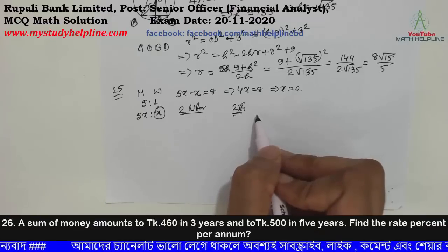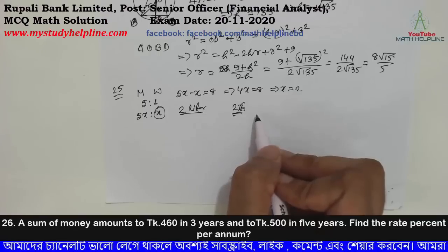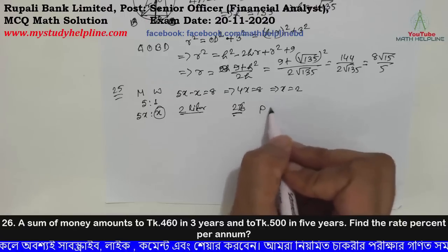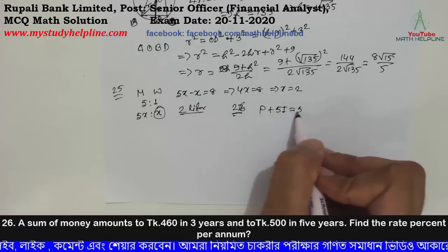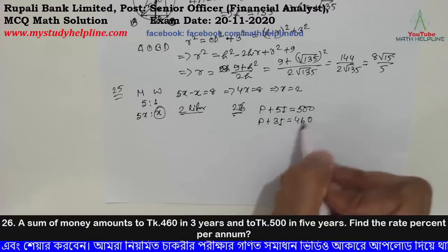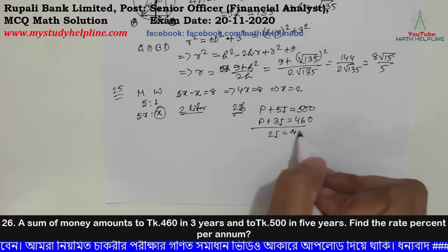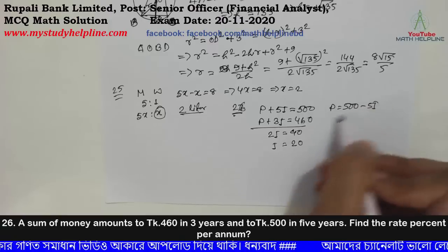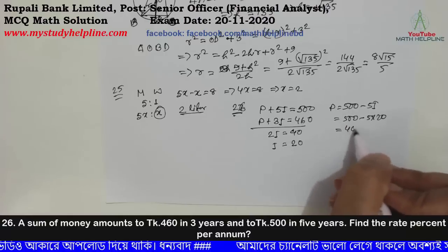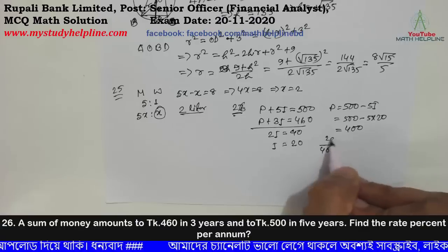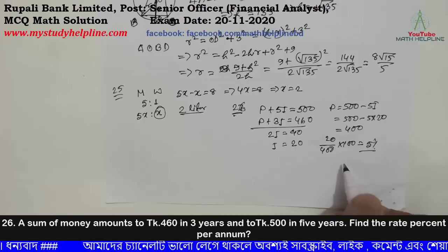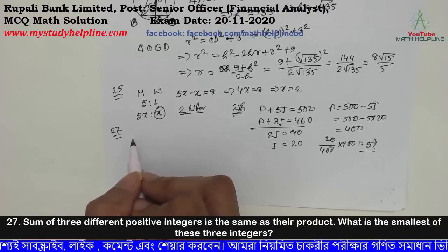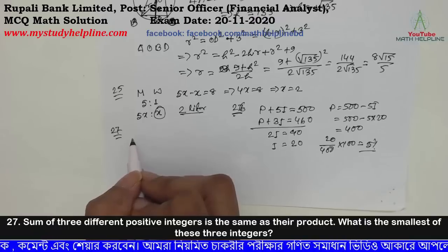Sum of amounts: taka 460 in 3 years and taka 500 in 5 years at simple interest. Writing equations: 500 equals principal plus 3 years interest, and 460 equals principal plus the respective interest. Solving: interest equals 20, so 500 minus 5 times 20 equals 400. Then the interest rate is found from the difference.